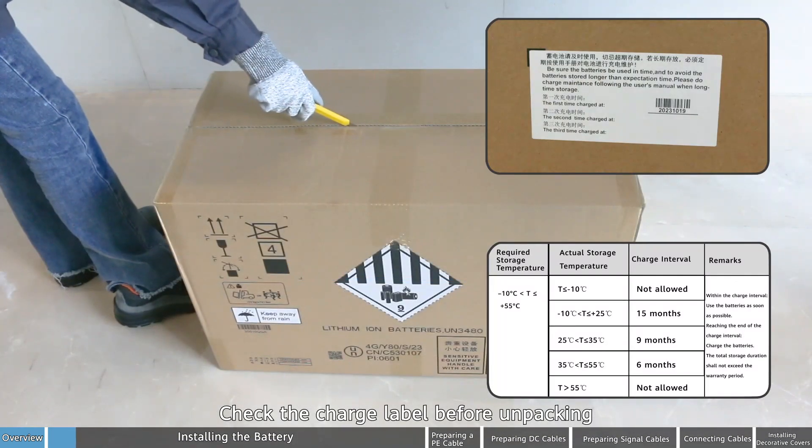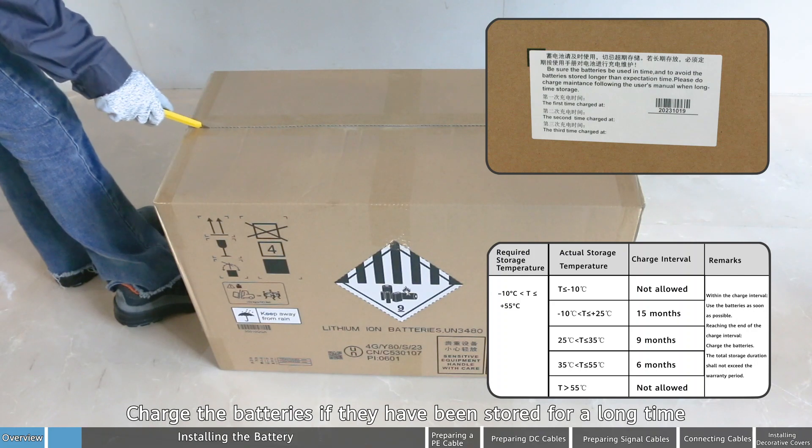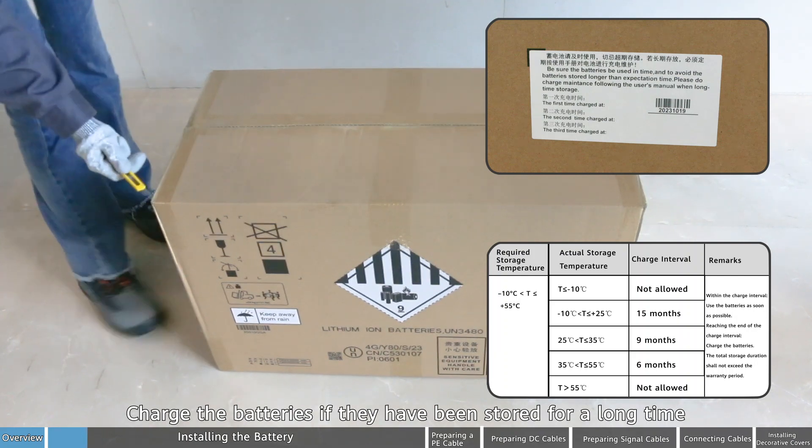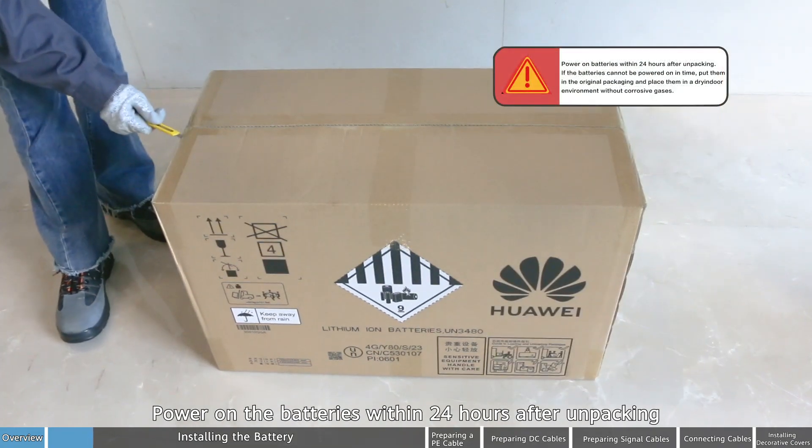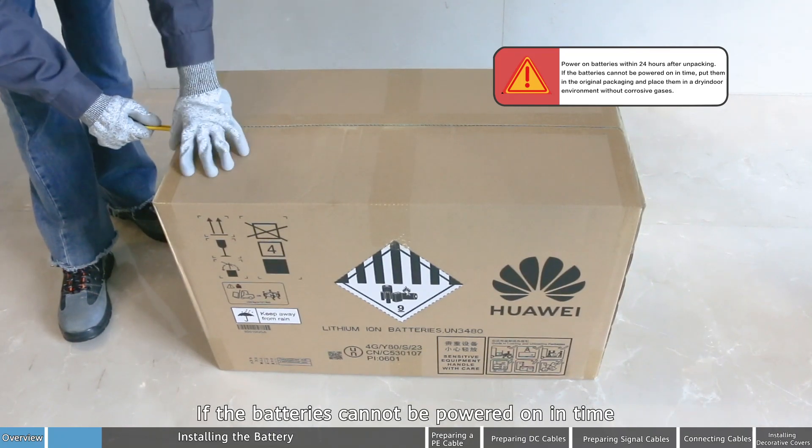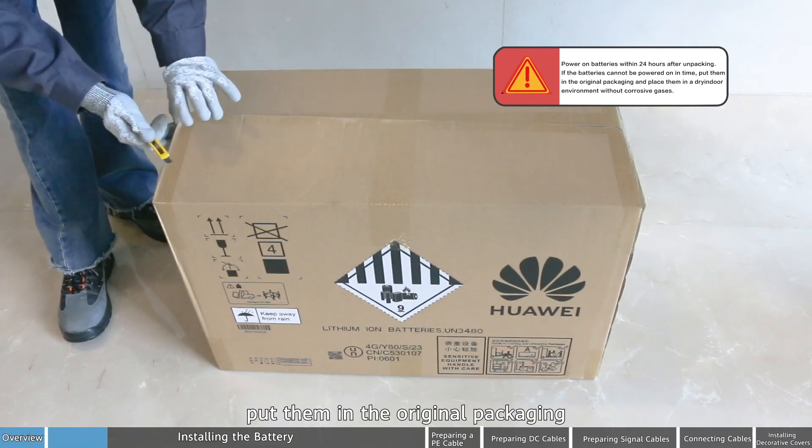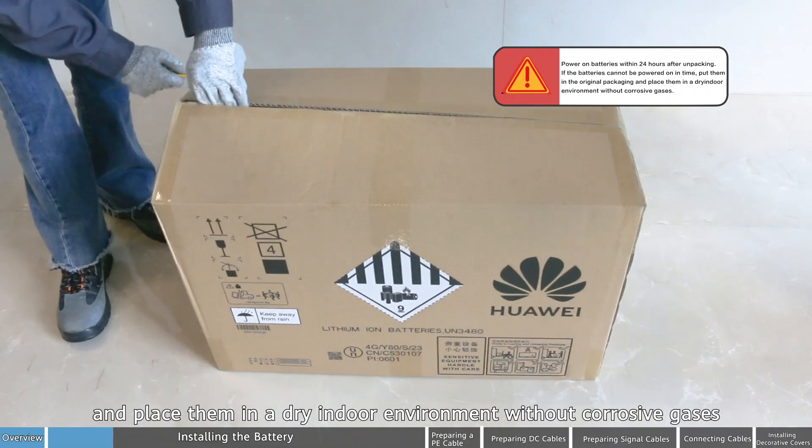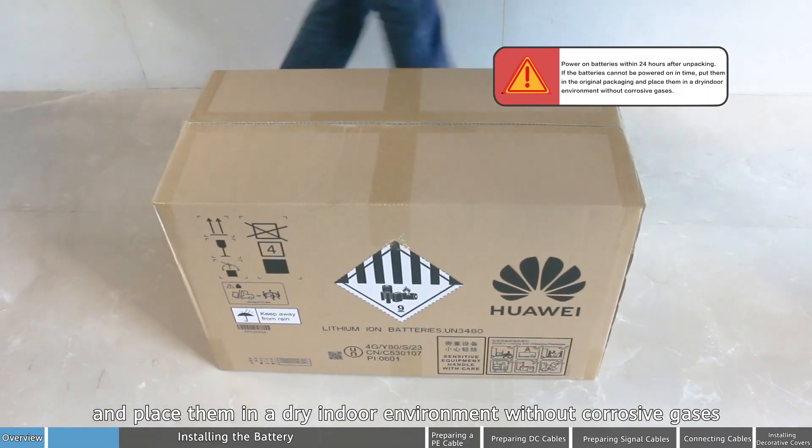Check the charge label before unpacking. Charge the batteries if they have been stored for a long time. Power on the batteries within 24 hours after unpacking. If the batteries cannot be powered on in time, put them in the original packaging and place them in a dry indoor environment without corrosive gases.